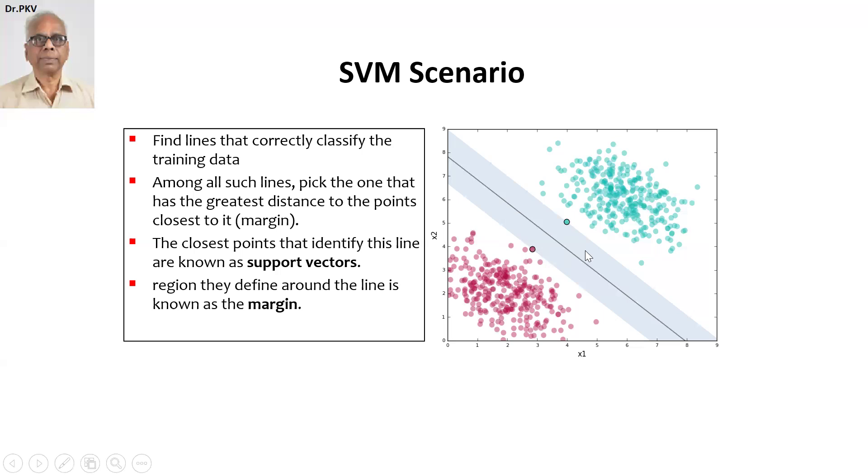So region they define around the line is known as the margin. So your idea is to separate points that are on the boundary as far away as possible from the best line.